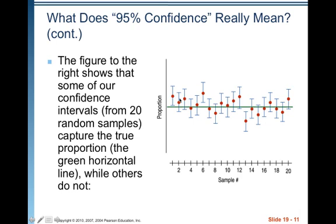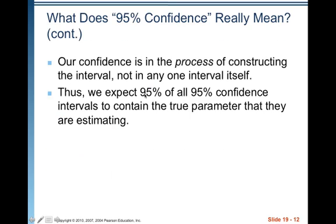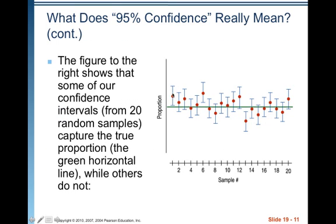We can claim with 95% confidence that the interval p-hat ± 2 × SE(p-hat) contains the true population proportion. The extent of the interval on either side of p-hat is called the margin of error. In this case, our margin of error is 2 × SE(p-hat). In general, confidence intervals have the form: estimate ± margin of error, i.e., p-hat ± 2 × SE(p-hat).